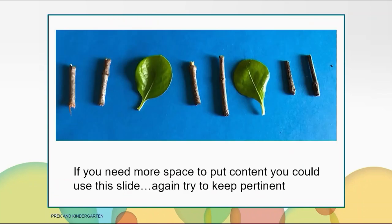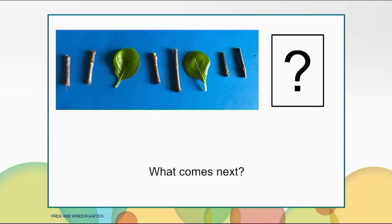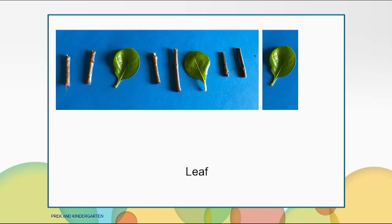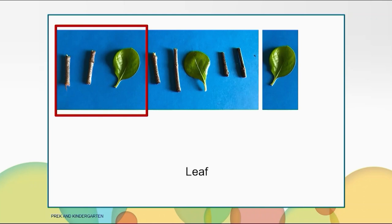I decided to use only two things for my first pattern. I made twig, twig, leaf, twig, leaf, twig, twig. What will come next in my pattern? Right, a leaf. How did you know? If you look at what is in the box I made, you will see twig, twig, leaf. This is the core of the pattern, and the core is the part of the pattern that keeps getting repeated.